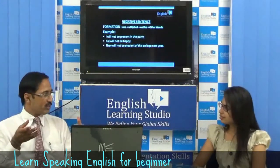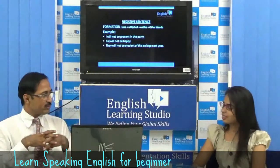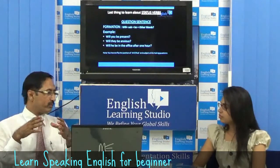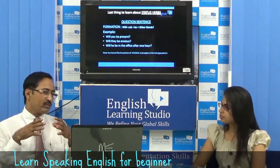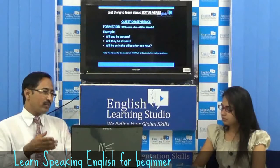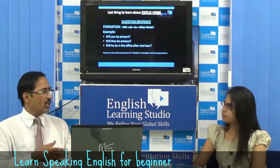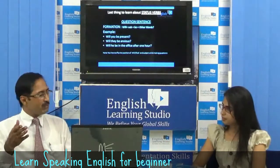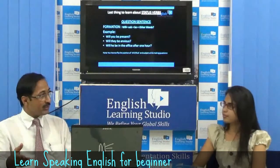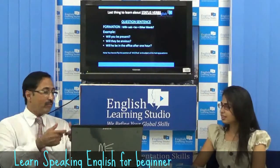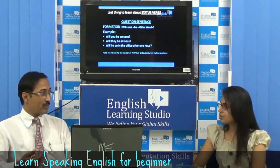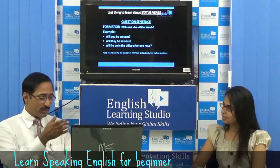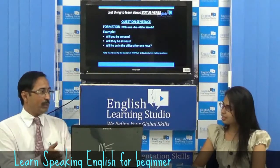'They will not be students of the college next year.' For interrogative question sentences, the formation is: start with will first, or shall depending on the subject, then put the subject, then put be. For example, 'Will you be present?' — subject comes in between will and be.